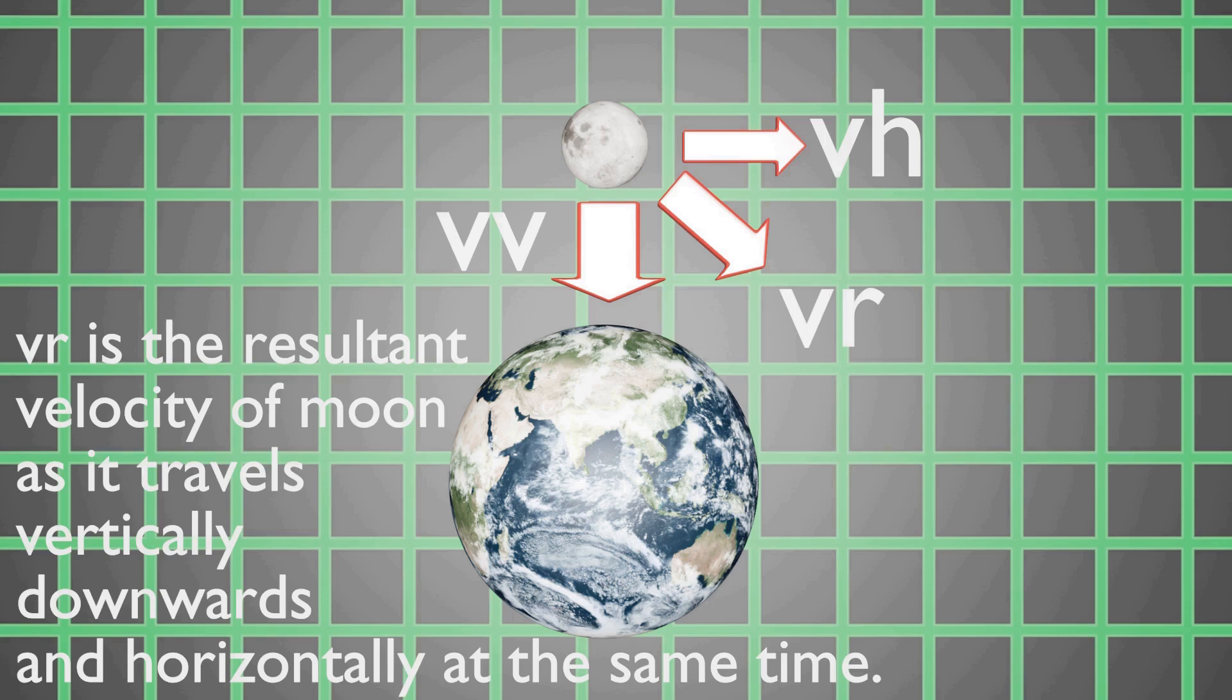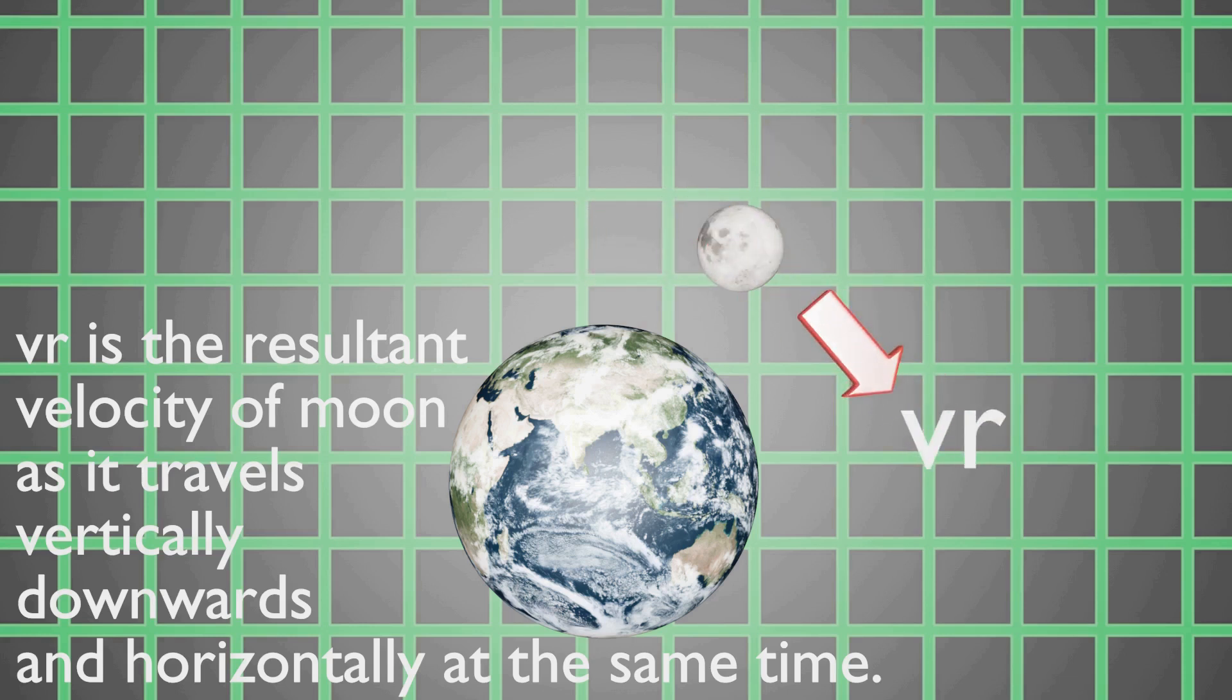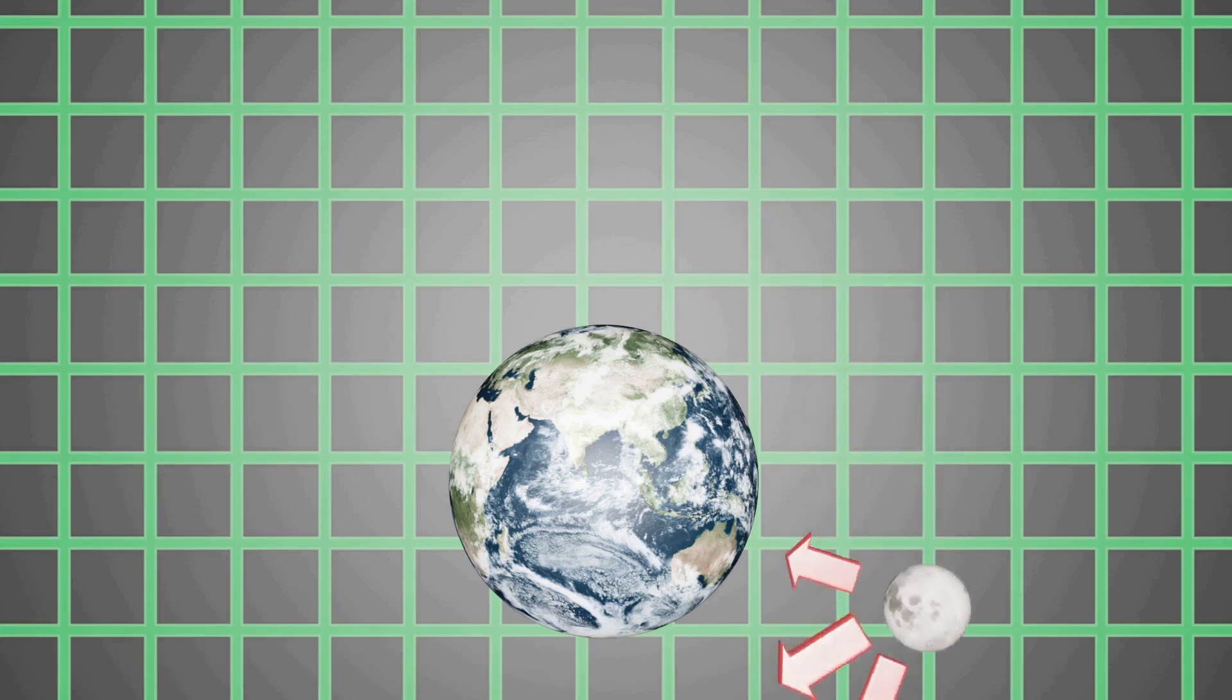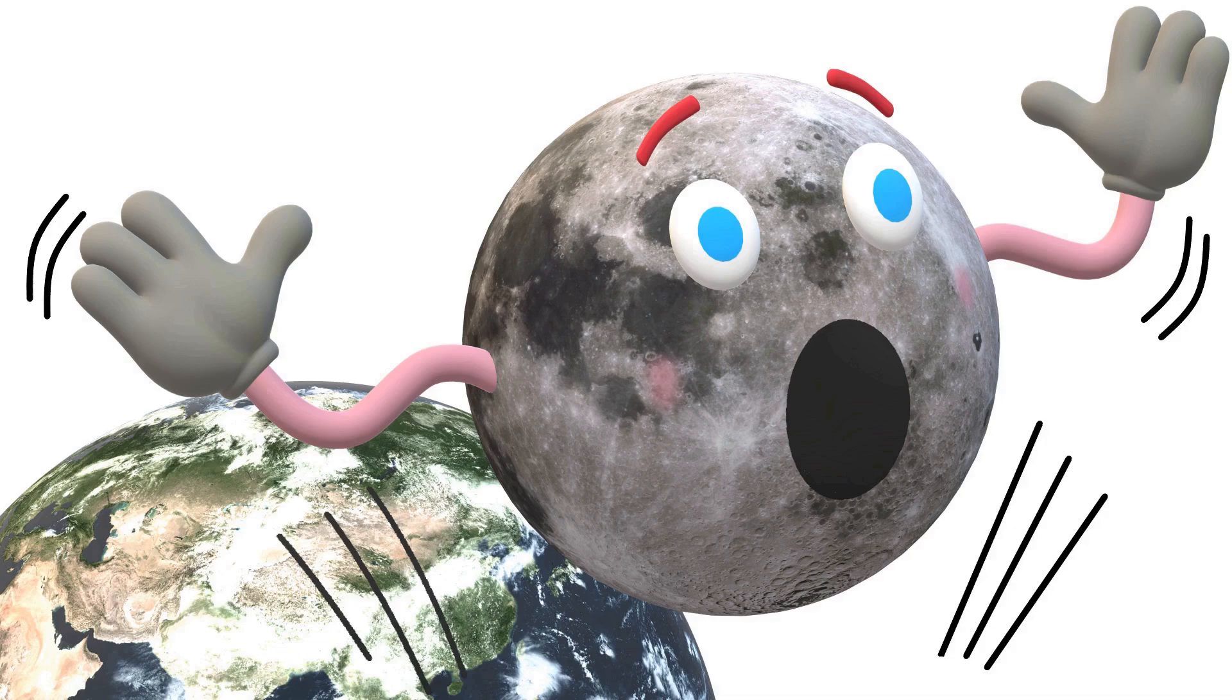When the moon is moving towards the Earth—that is, falling onto the Earth—at the same time, because of its horizontal speed, it is traveling some distance in the horizontal direction. When this process continues every time the moon travels, we see the motion to be circular, and hence the moon is actually falling.